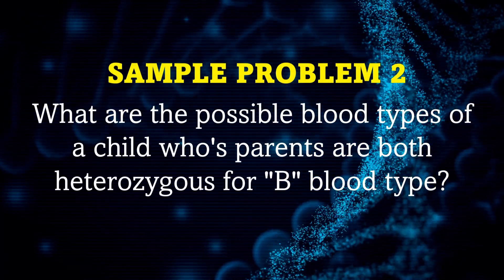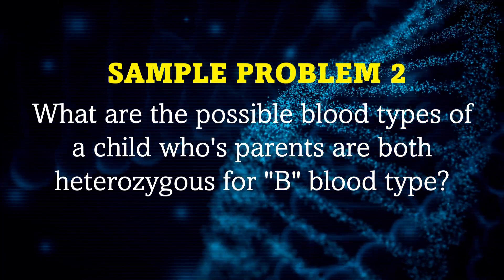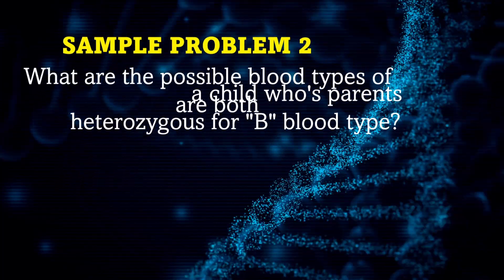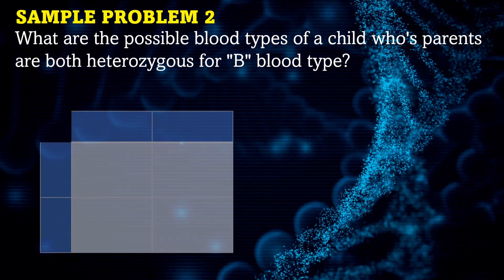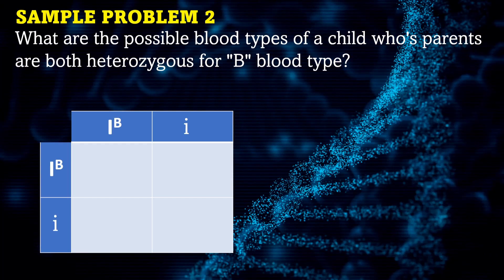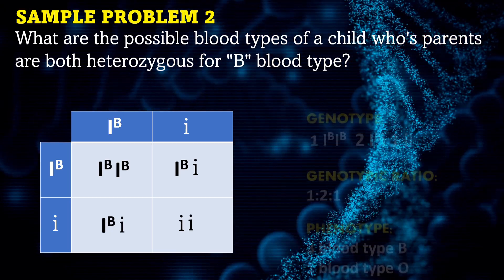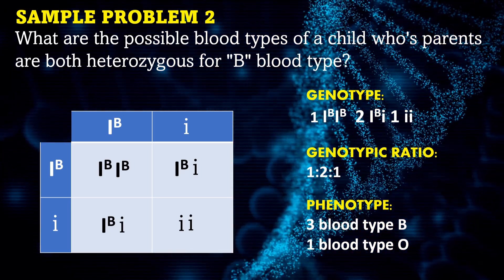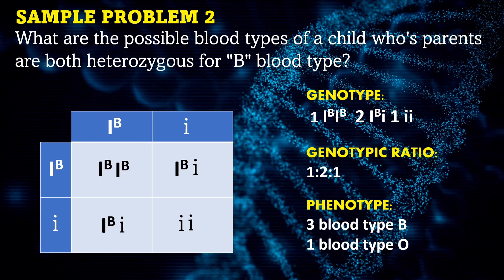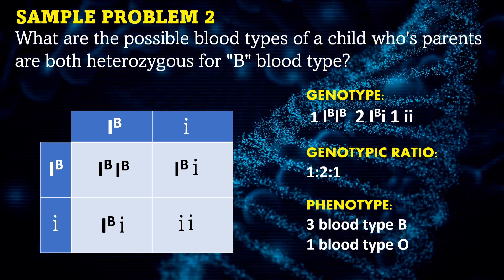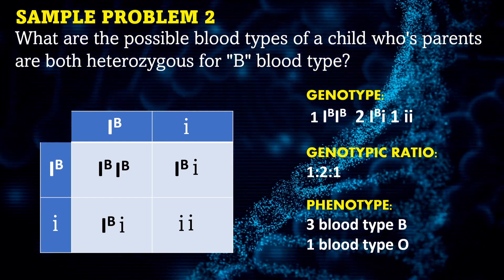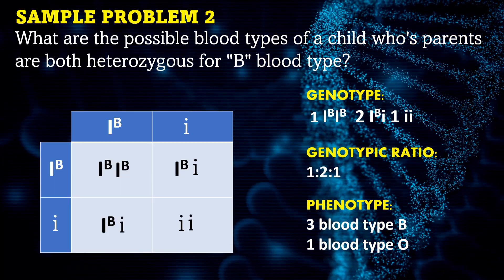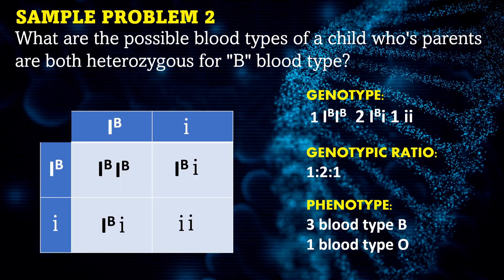Sample problem 2: What are the possible blood types of a child whose parents are both heterozygous for blood type B? Using the Punnett Square, the genotype results in 1 homozygous B, 2 heterozygous B, and 1 homozygous O. The genotypic ratio is 1 to 2 to 1. For the phenotype: 3 blood type B and 1 blood type O.